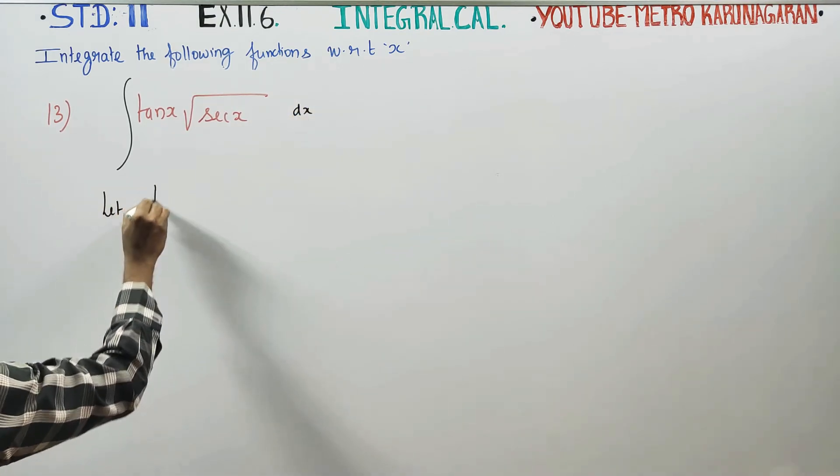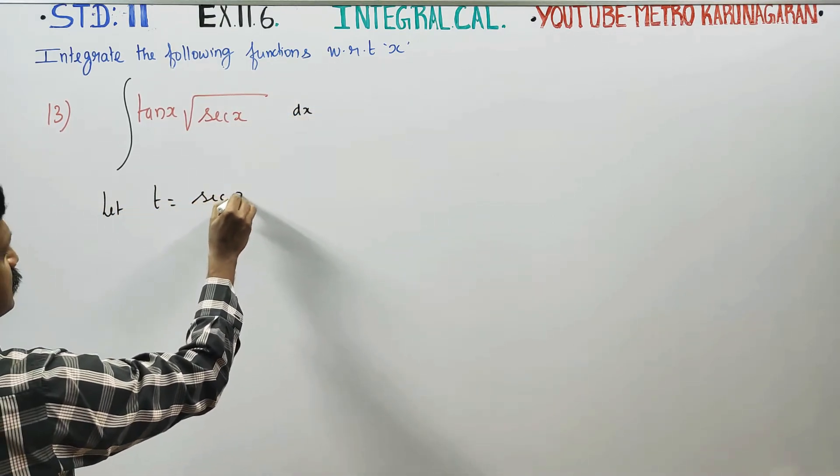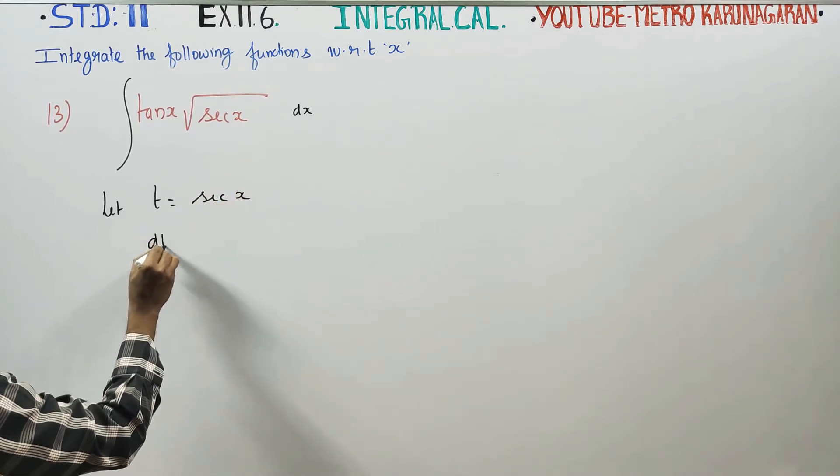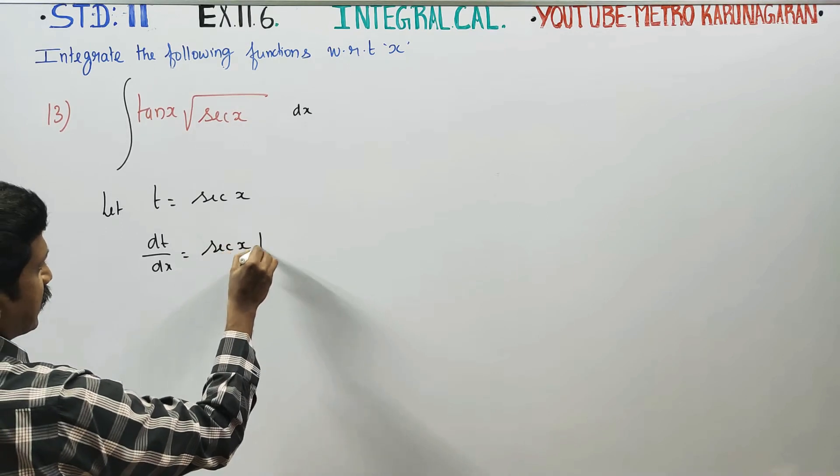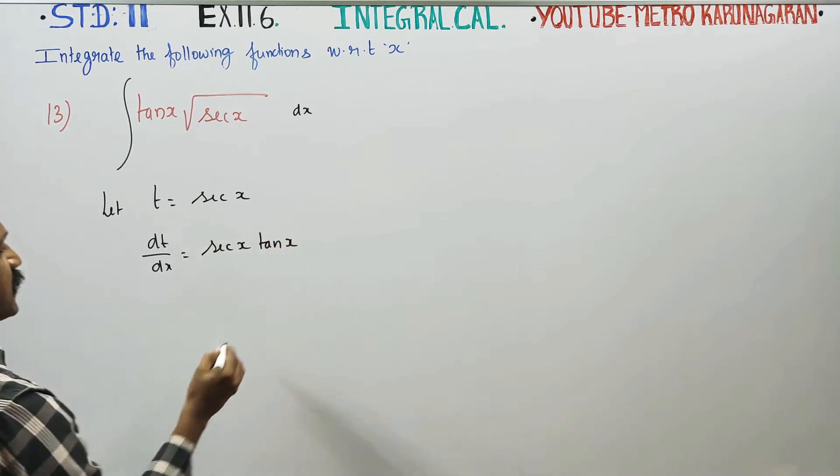I am going to take a substitute. Let t is equal to secant x. dt by dx, secant x differentiate, secant x tan x.